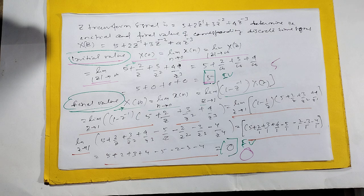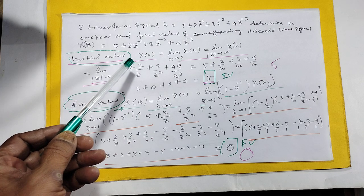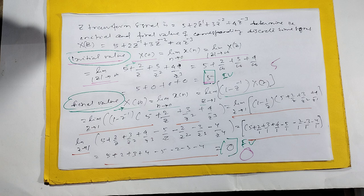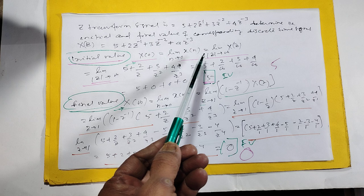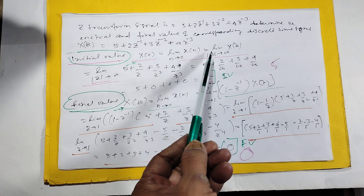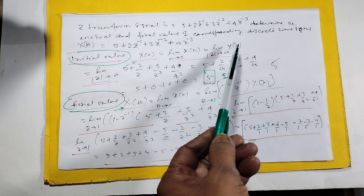What is initial value? Initial value means X[0]. That means limit N tends to infinity of X[N]. Then in Z transform, limit Z tends to infinity of X(Z).